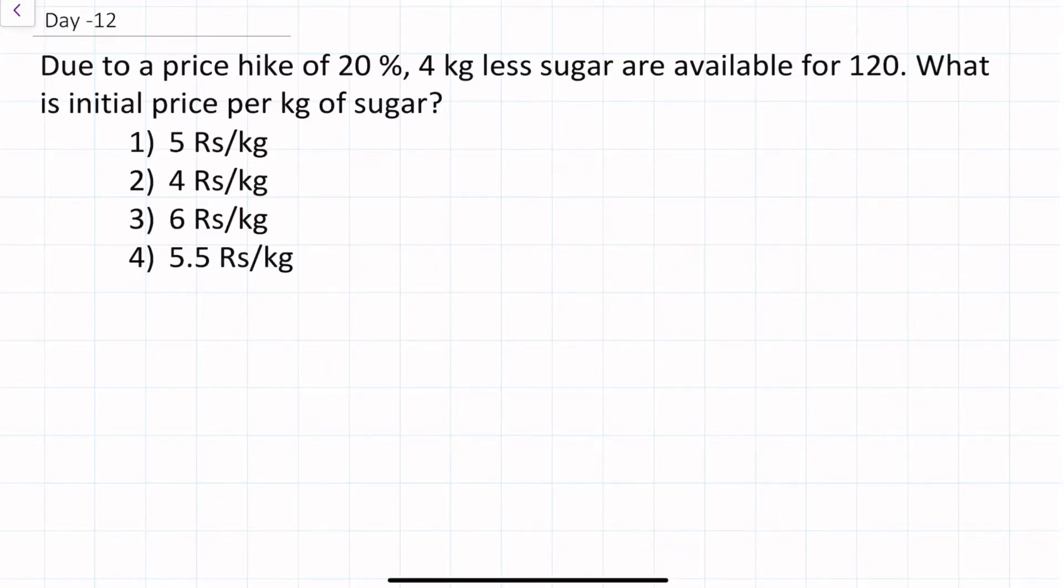Hello everyone, welcome you all. This is a video related to general aptitude series. The problem is related to percentage. Due to a price hike of 20%, 4 kg less sugar are available for 120 rupees. What is the initial price per kg of the sugar?